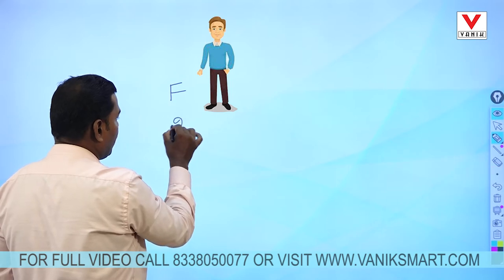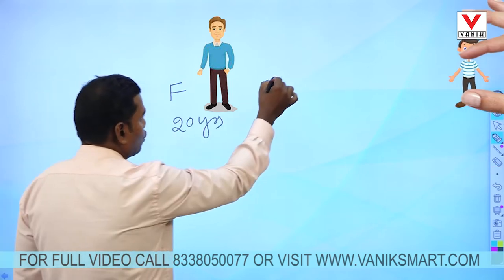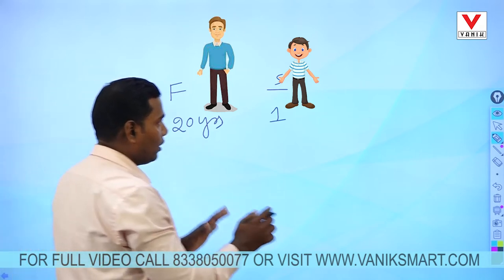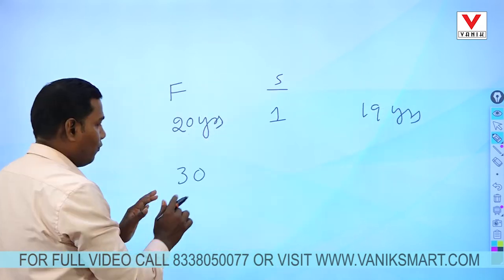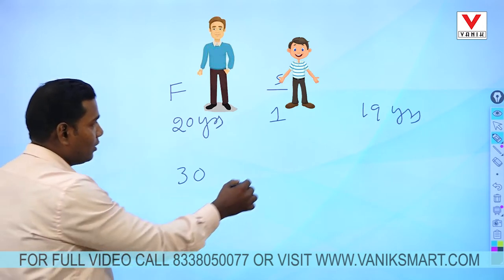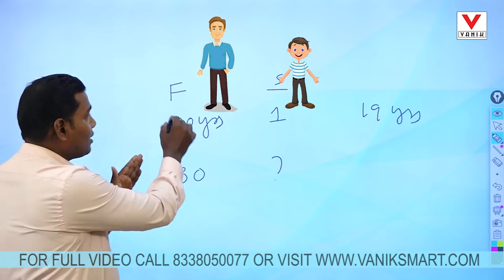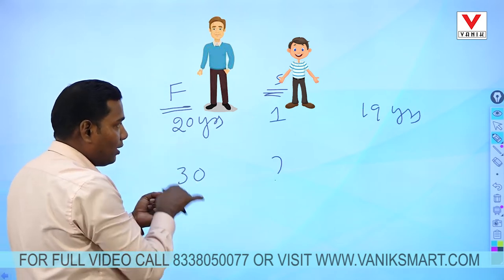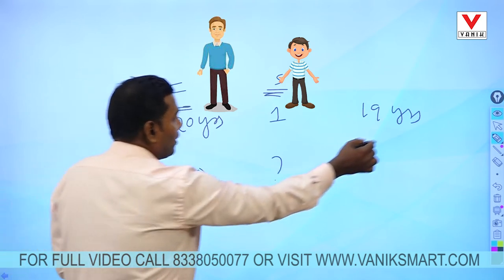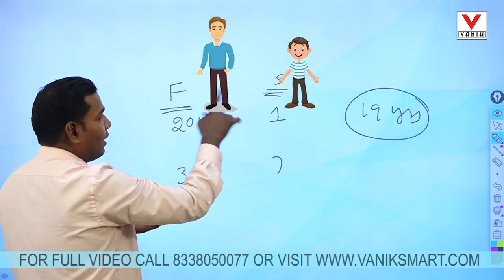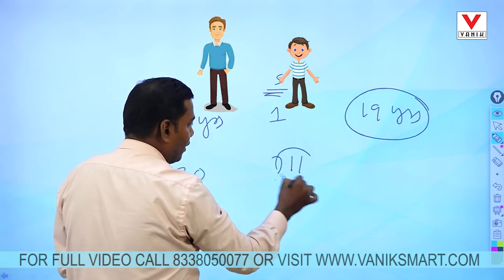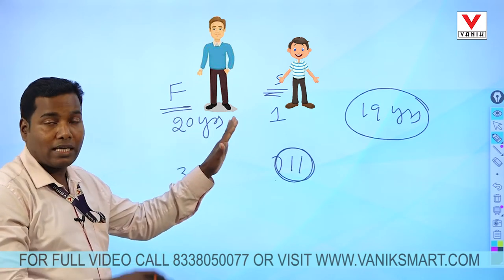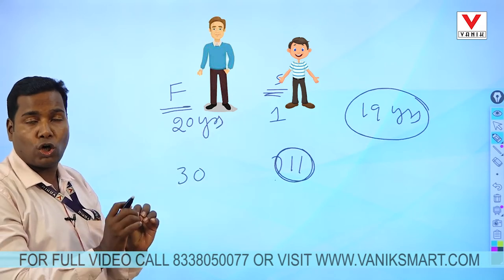Father's age is 20 years and son's age is 1 year. The father and son difference is 19 years. When father's age is 30, find the son's age. The difference between son and father is 19, so 30 minus 19 equals 11. The key concept is that the father and son age difference always remains equal, whether before or after any number of years.